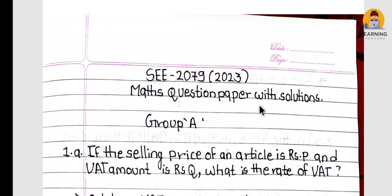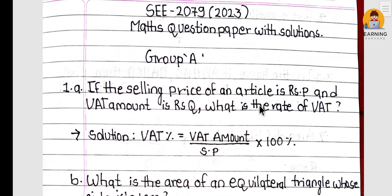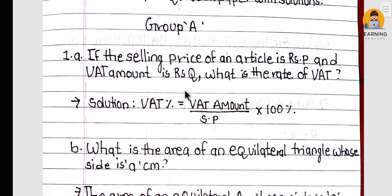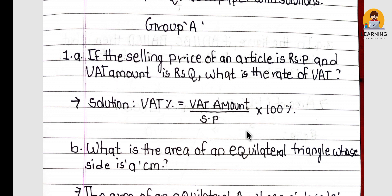In Group A, question 1(a): If the selling price of an article is Rs P and the VAT amount is Rs Q, what is the rate of VAT? To find VAT percent, the formula is: VAT percent = (VAT amount / SP) × 100 = (Q / P) × 100 percent.